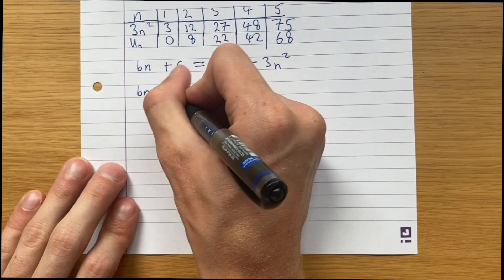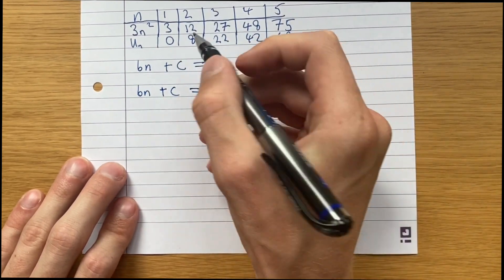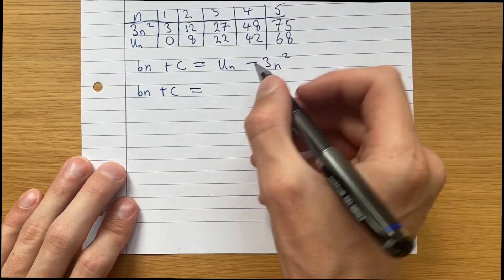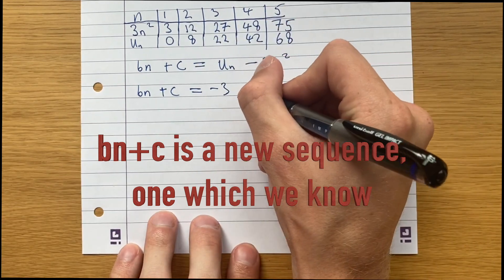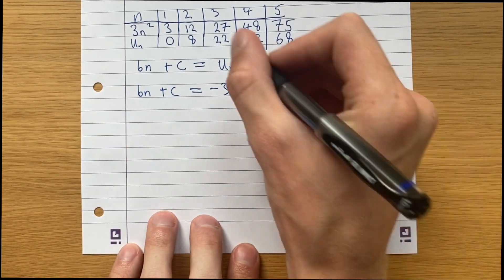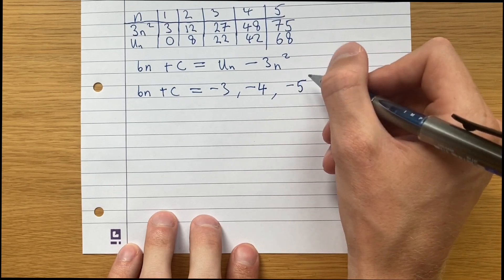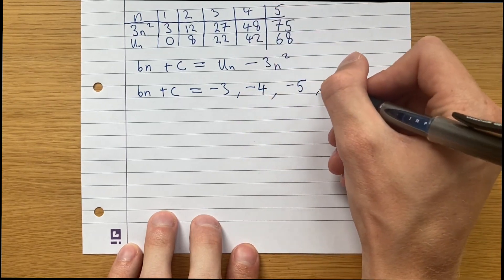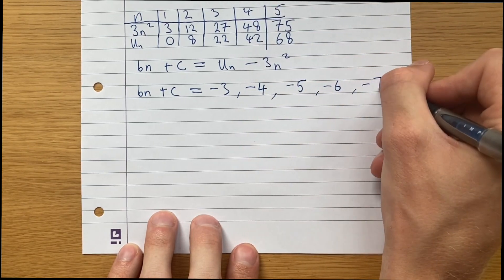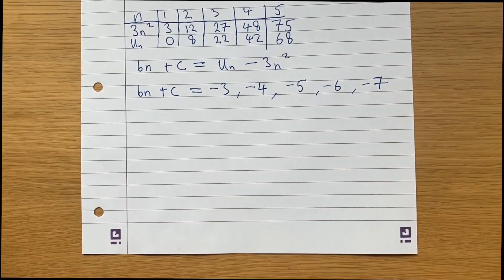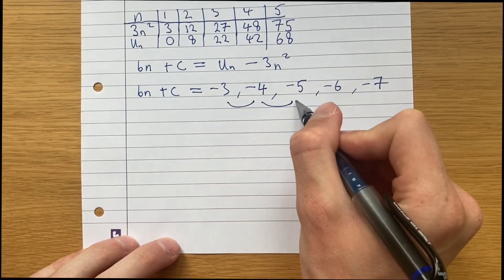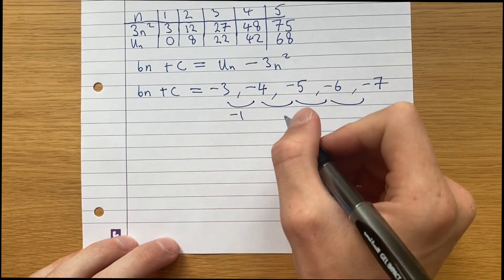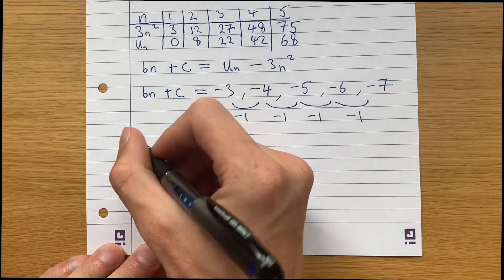we can say that bn plus c is equal to 0 minus 3, 8 minus 12, 22 minus 27, 42 minus 48. You can see a pattern here. And now we do the exact same thing that we did when calculating linear sequences. For linear sequences, the common difference is minus 1. So this tells us that b is equal to minus 1.